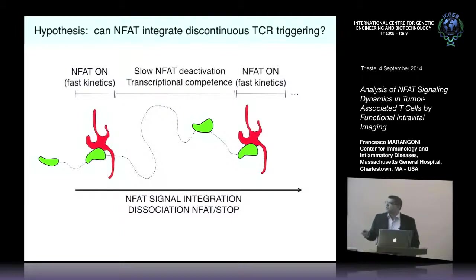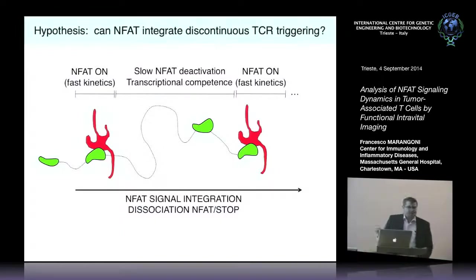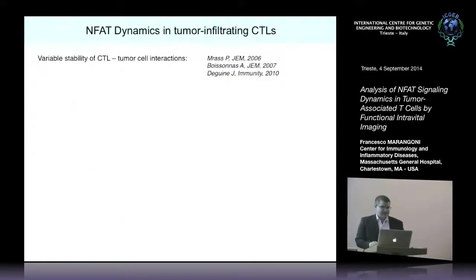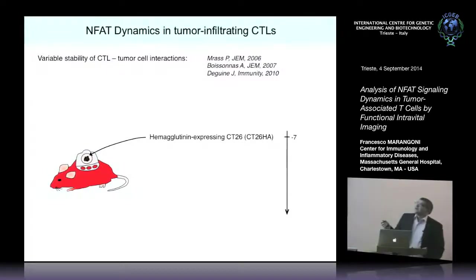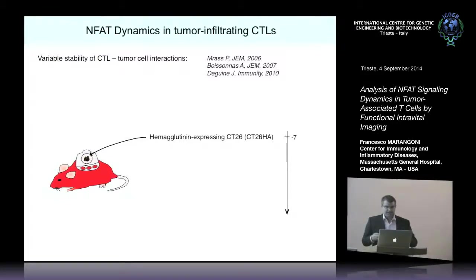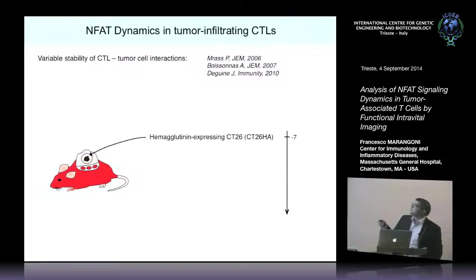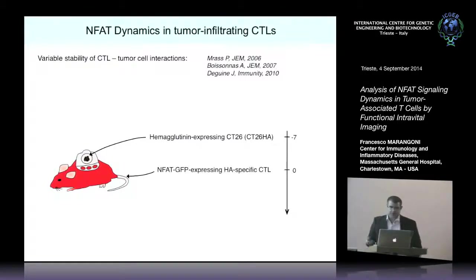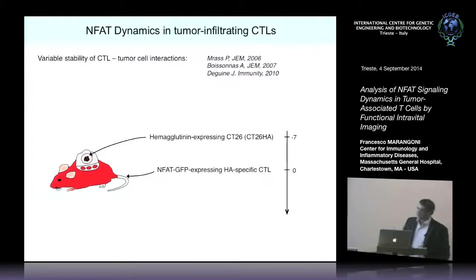The prediction is that we will observe a dissociation of NFAT activation and stop — in good conditions, we may observe actively migrating cells that are nonetheless activated. To verify that, we went back in vivo, choosing a tumor model in which antigen-presentation is known to be poor, which promotes the onset of serial contacts instead of stable contacts. We put CT26 tumors expressing hemagglutinin into a skinfold chamber; after one week we came in with NFAT-transduced HA-specific CTLs, and then acquired movies from day two to day seven.